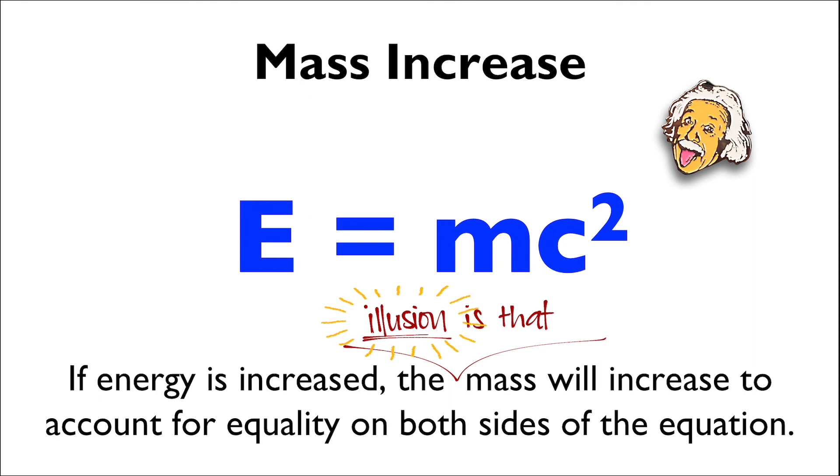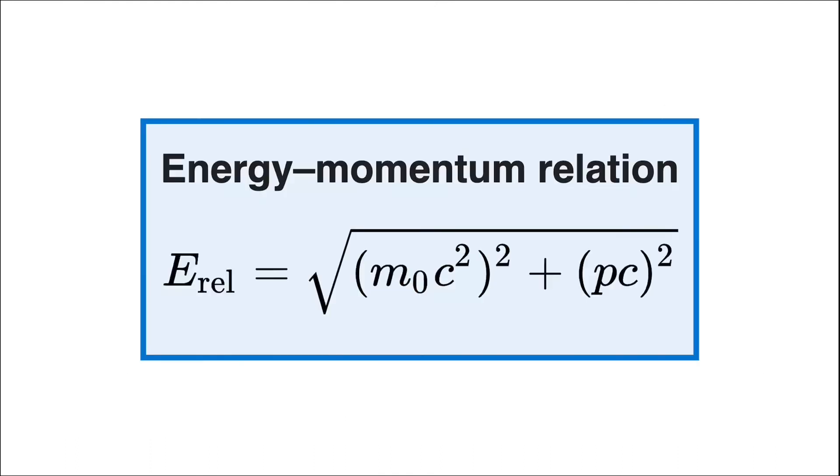The more precise relativistic energy equation is actually referred to as the energy-momentum relation, and it looks like this. But we won't be dwelling on it too much in this class. You can look into it if you want, but for all intents and purposes of this class, we'll be moving on to general relativity.